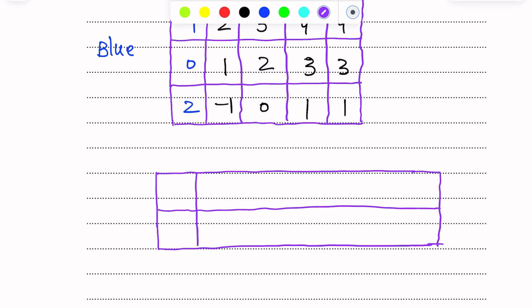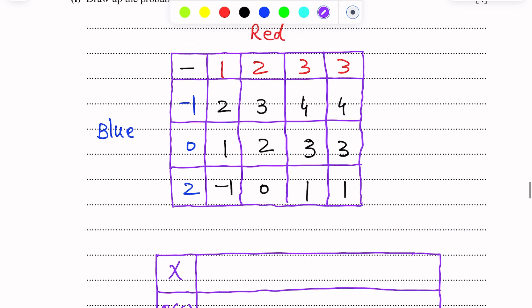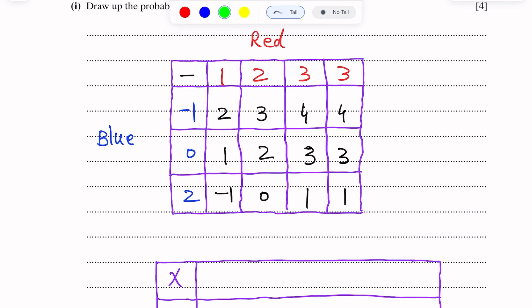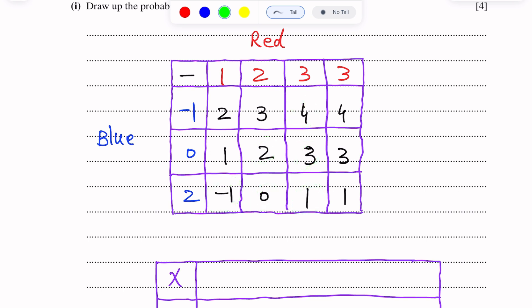This is X, and this is the probability of X. We are making a table. X can take these values in order: minus 1, 0, 1, 2, 3, 4.